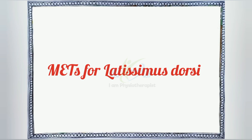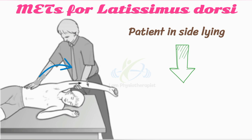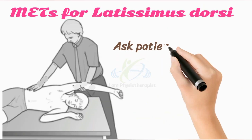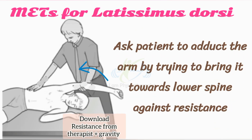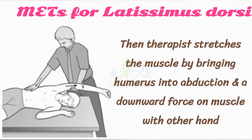Muscle energy technique for the latissimus dorsi: in side-lying position, the patient's arm is abducted up to the first restriction barrier. The patient is then asked to adduct the arm by trying to bring it towards the ceiling, backwards and down towards the lower spine, against firm resistance, using only 20% effort, while holding their breath. After release of effort, the patient exhales and relaxes. The therapist then stretches the muscle for 10 seconds by bringing the arm into abduction and applying a downward force on the muscle with the other hand.